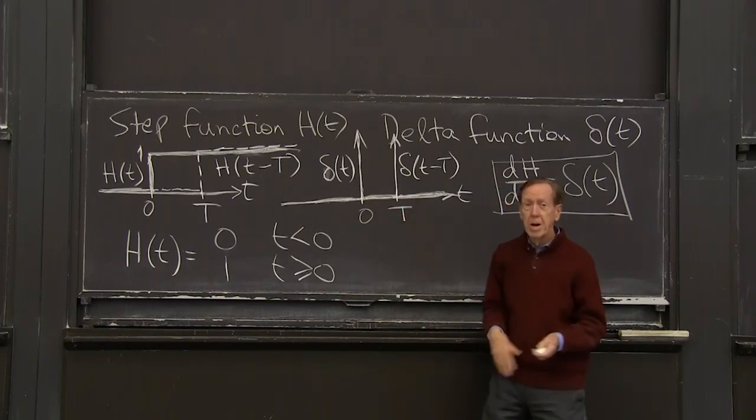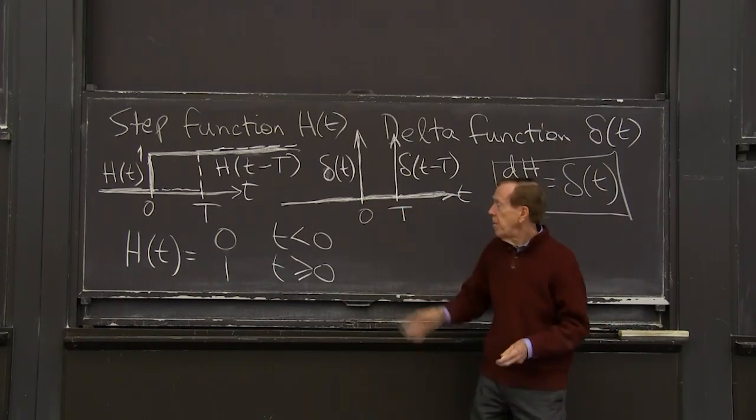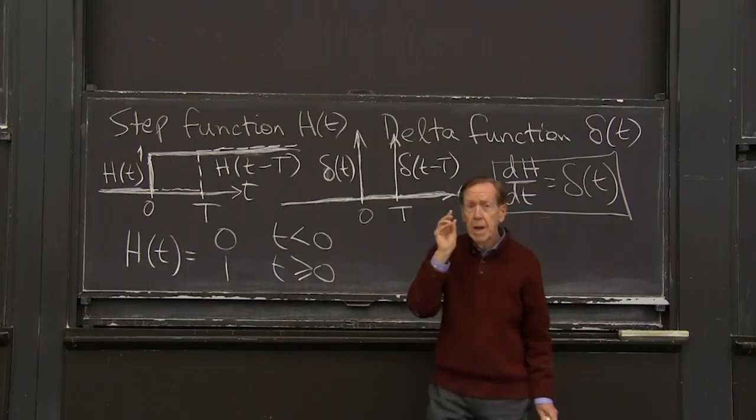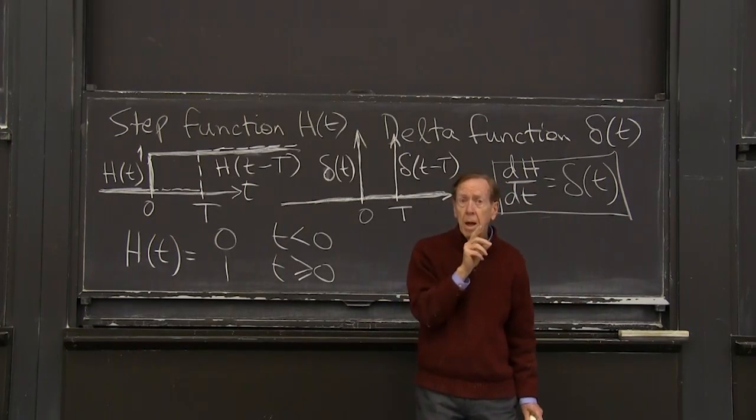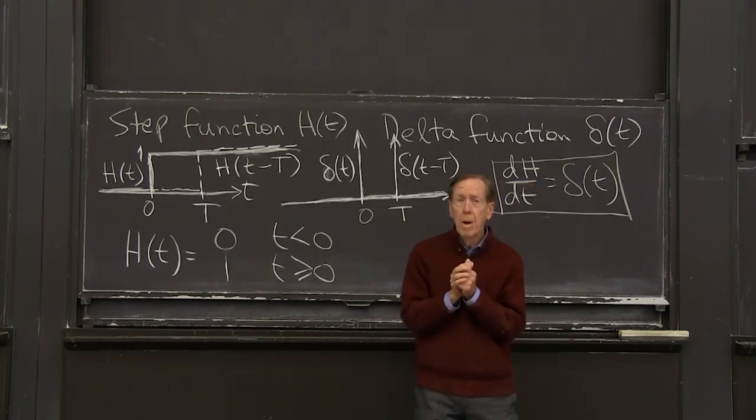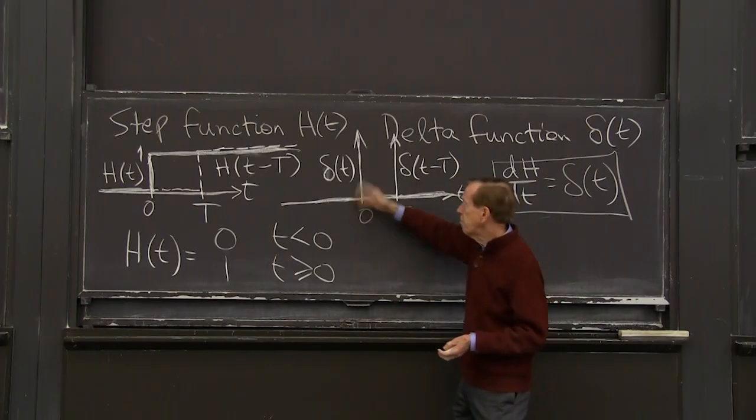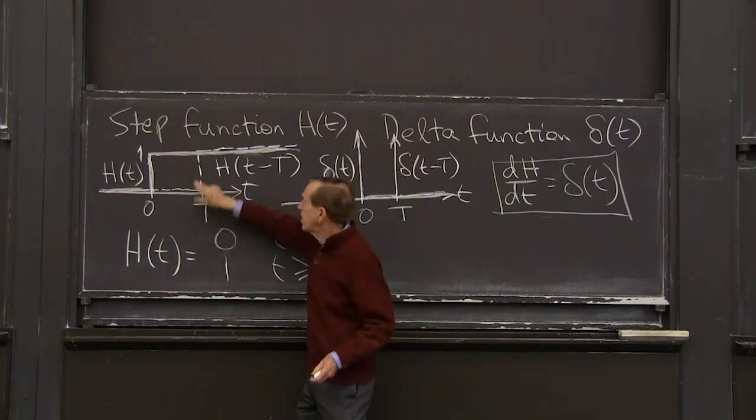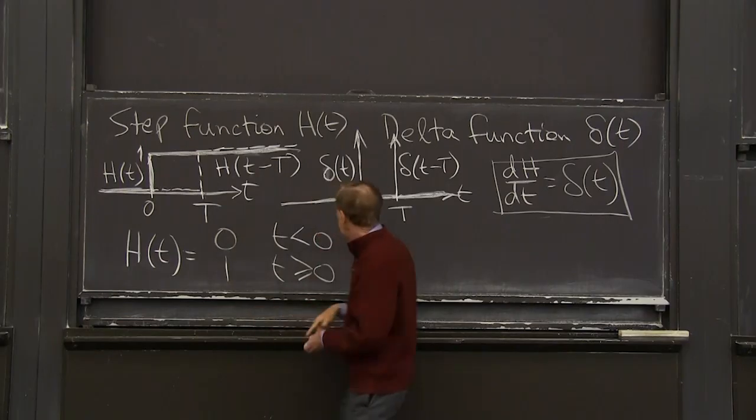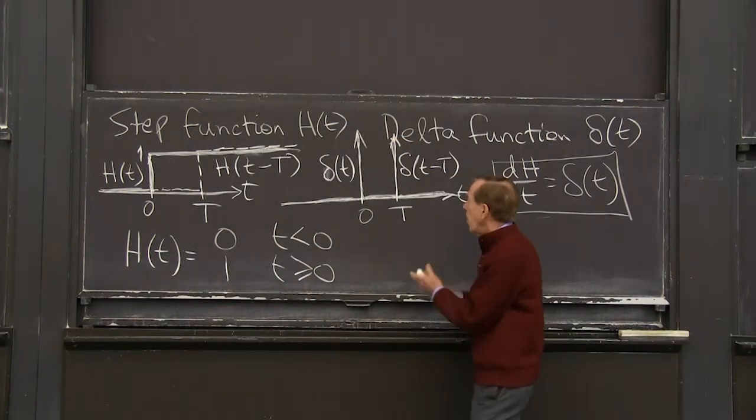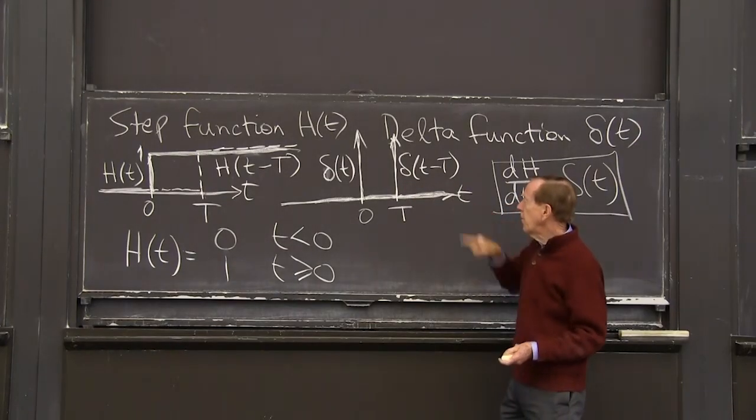It's perfect for all the uninteresting, boring part. But at the moment of truth, when something happens in an instant, we need to say more. We need to say more, not just it's infinite. And again, if it's shifted, then the infinite slope happens at t equal to capital T, so the infinity is just shifted over, and that would be the delta function there.